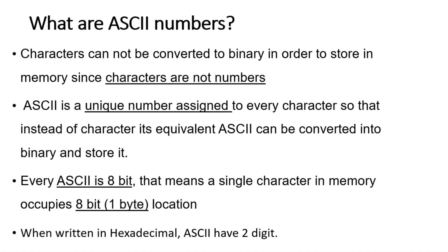These numbers are standard in the sense that they do not change worldwide. For example, the ASCII of capital A is 65 in decimal — this is true all over the world. Every character on the keyboard, whether a number, alphabet (small or capital letter), or special character, is assigned an ASCII value. You can refer to an ASCII table in Google to understand different ASCII values. Every ASCII number is 8-bit in nature, meaning every character is assigned a single unique ASCII number that is 8 bits or 1 byte.